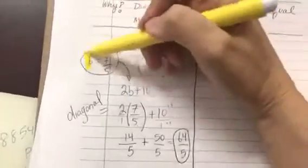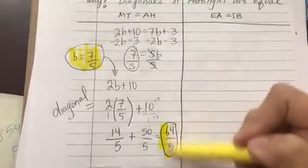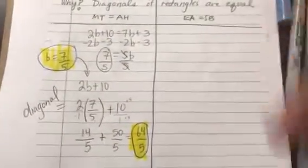I end up getting 64 over 5, which is my answer. So B is 7 fifths and my diagonal is 64 fifths. Now let's take a look at form A.